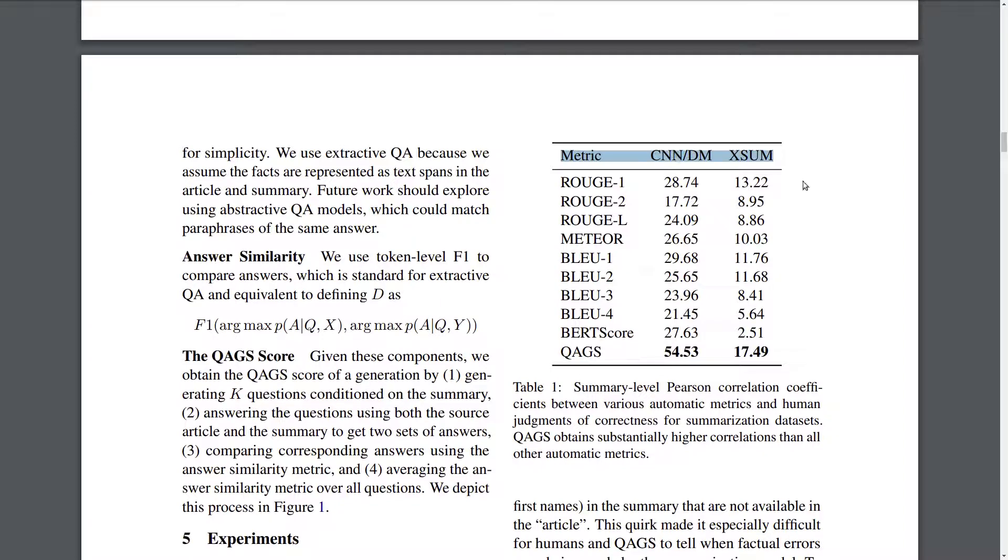One interesting finding is they actually annotate the CNN Daily Mail and XSum datasets. CNN Daily Mail is a standard one for longer summarization of multiple sentences. XSum is this extreme summarization dataset where you have a single output sentence, if I remember correctly.